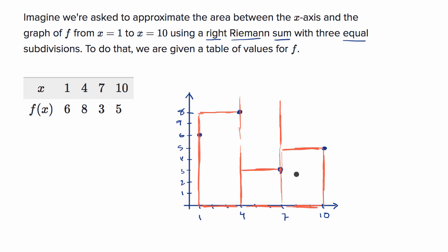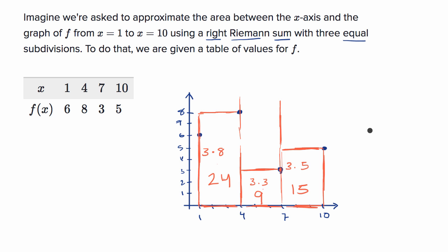Our right Riemann sum approximation using three equal subdivisions is the sum of the areas of these rectangles. The first rectangle is three wide and f of four equals eight tall, so that's 24 square units. The second is three wide and f of seven equals three tall, so that's nine square units. The third is three wide and f of ten equals five tall, so three times five gives us 15. Adding them up: 24 plus 9 plus 15 equals 48.